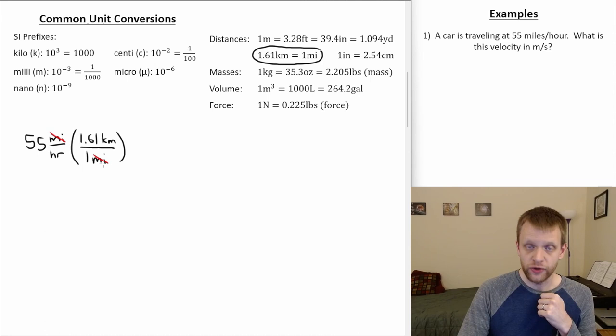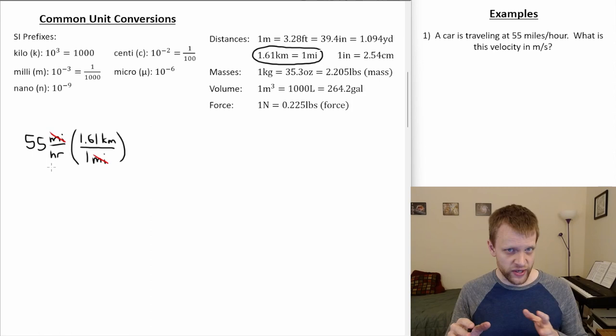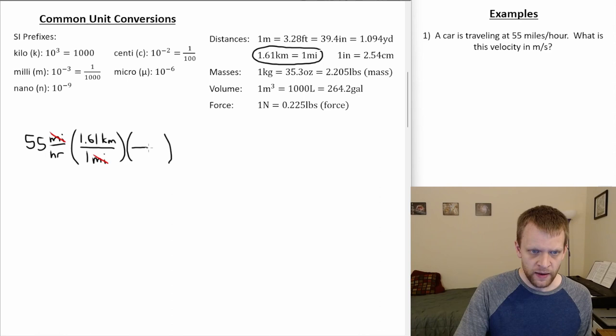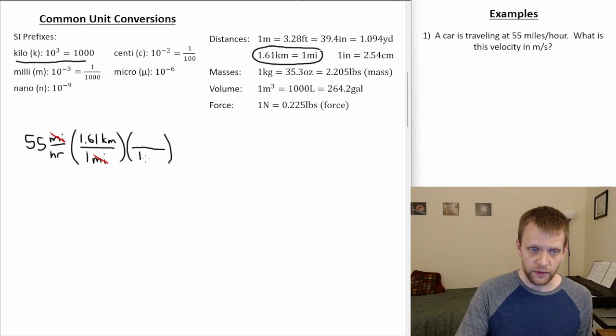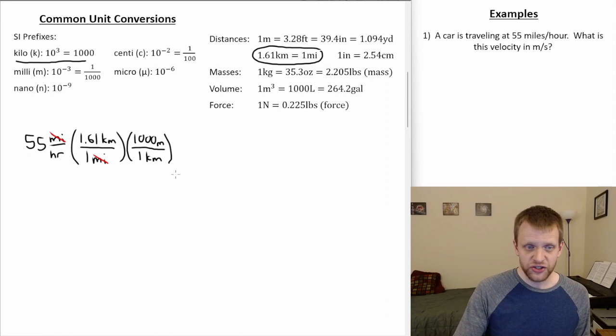But we want to get all the way to meters per second, so let's introduce another conversion factor to switch kilometers to meters. Kilo means 1,000, so there are 1,000 meters in each kilometer. Since kilometers is now in the numerator, we put 1 kilometer in the denominator and 1,000 meters in the numerator. If we stopped here, we'd be left with meters per hour.